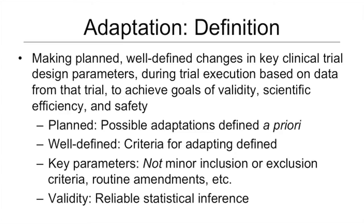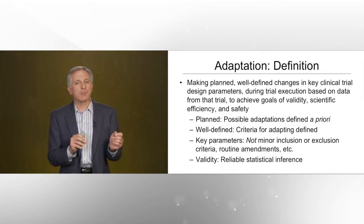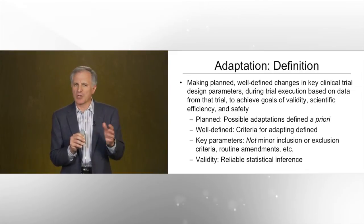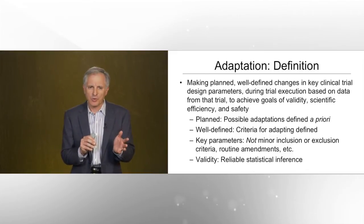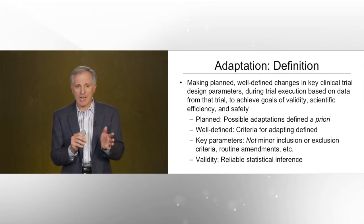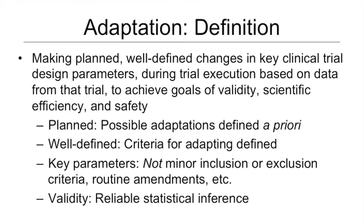By 'planned,' we mean that all the changes that we might make are defined a priori. By 'well-defined,' we mean that the criteria for making those changes are planned. By 'key parameters,' we're talking about changing big things like the number of treatment arms, the dose that's used, or the timing of interim analyses — not minor inclusion or exclusion criteria, not the sorts of things that would fall under routine amendments. We want to do this in a way that achieves scientific validity and allows reliable statistical inferences regarding the treatment effects observed.